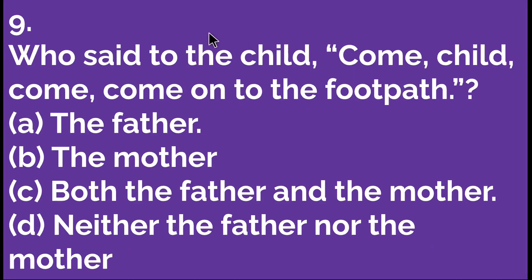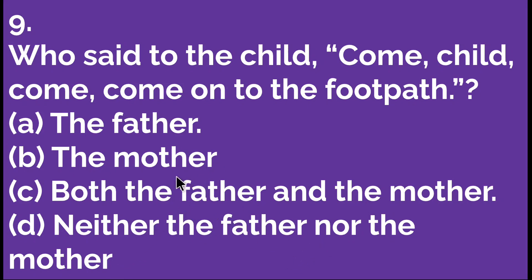The next question: who said to the child, 'Come child come, come on to the footpath'? Option A: the father. Option B: the mother. Option C: both the father and the mother. Option D: neither the father nor the mother. The mother said this. So B is the right answer. Let's move to the next question.